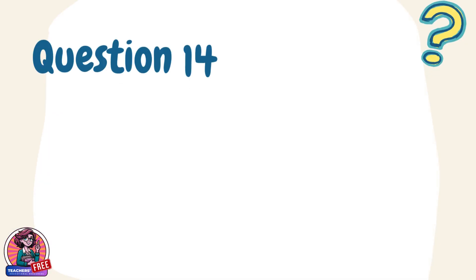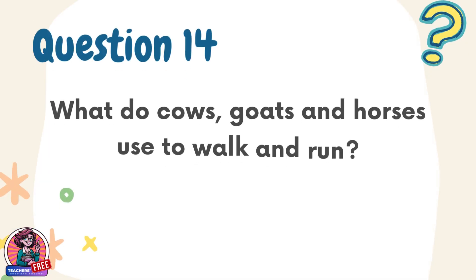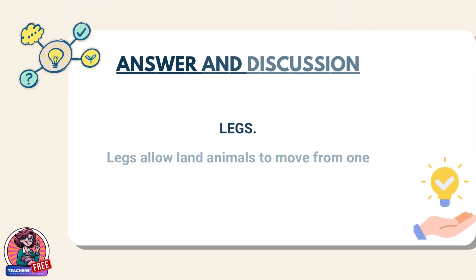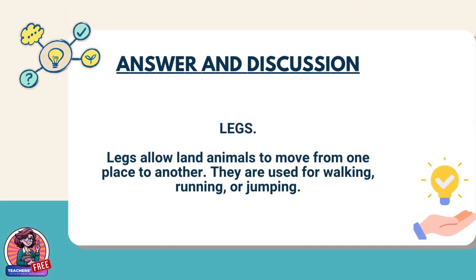Question 14. What do cows, goats, and horses use to walk and run? Answer: Legs. Legs allow land animals to move from one place to another. They are used for walking, running, or jumping.